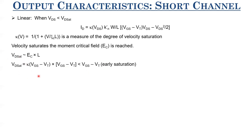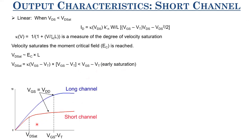VDSAT for short-channel devices is always less than VGS − VT, leading to early saturation. If this represents the output characteristics of a long-channel MOSFET saturating at VGS − VT, the short-channel MOSFET will saturate at a smaller voltage VDSAT < VGS − VT. This velocity saturation leads to early saturation in short-channel MOSFETs compared to long-channel MOSFETs. Since modern devices are all short-channel, this is the characteristics you will encounter in industry.